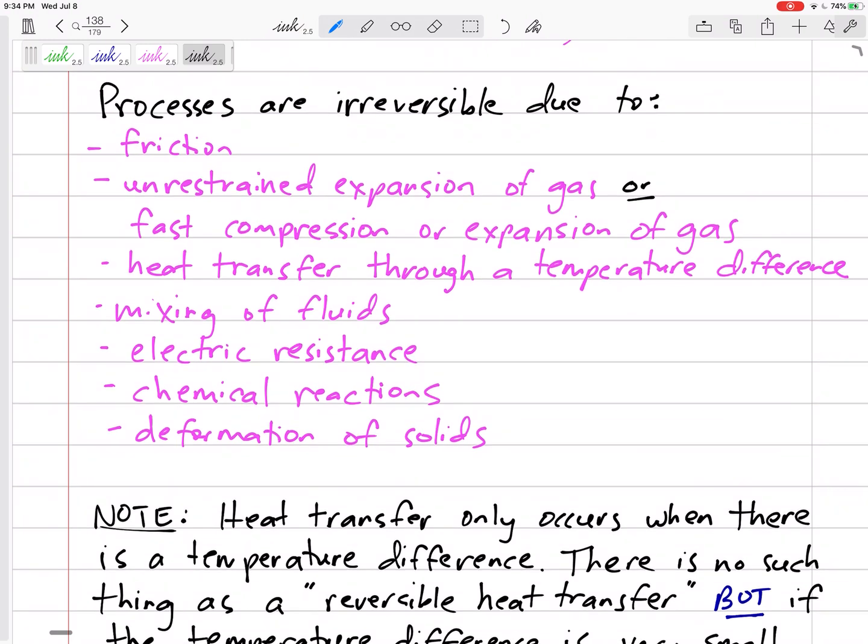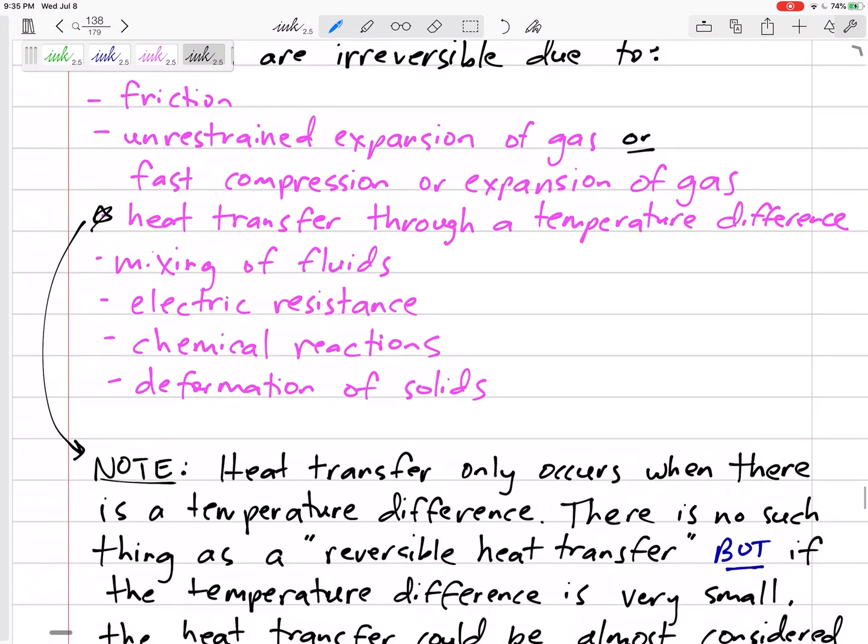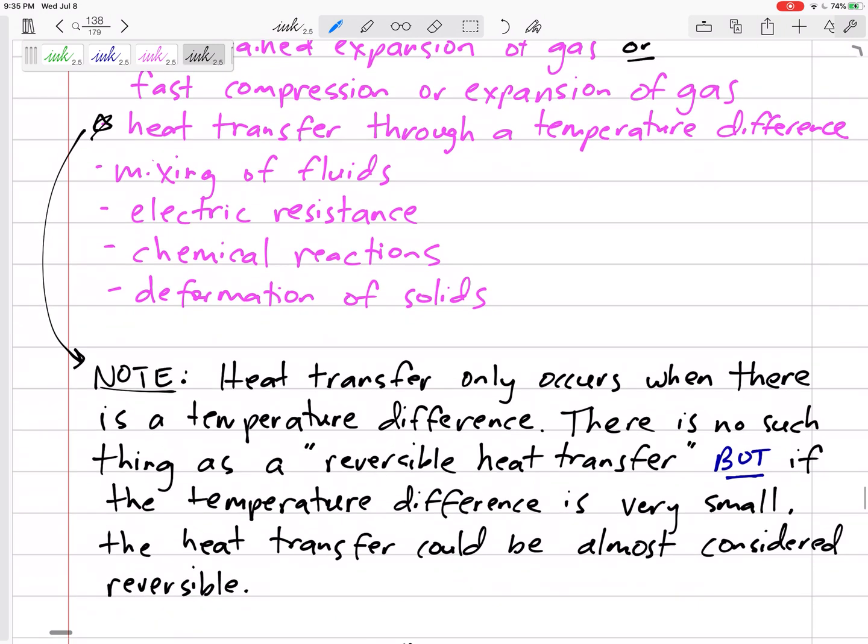We're going to have a little bit of some of these. Heat transfer through a temperature difference - the only way we have heat transfer is through a temperature difference. That's why processes are never going to be reversible. Heat transfer only occurs when there is a temperature difference. There's no such thing as a reversible heat transfer.